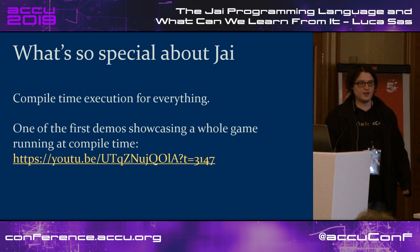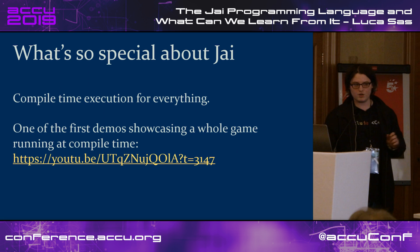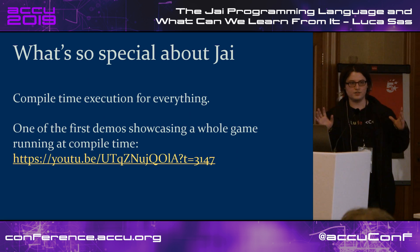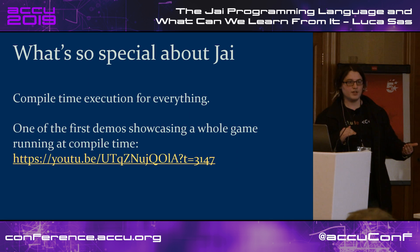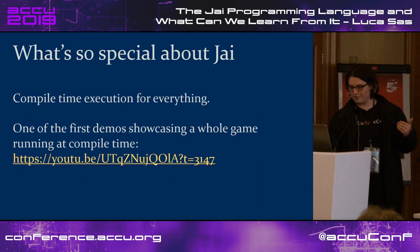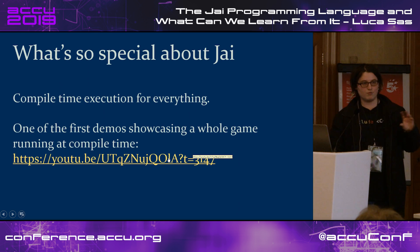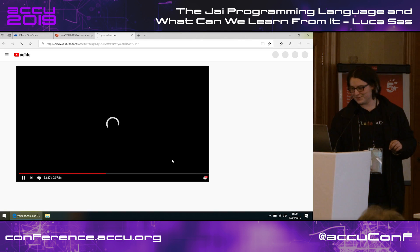One of the main features presented in one of the first demos of Jai was the ability to run everything at compile time. Your source files get compiled into an intermediate bytecode and the compiler knows how to run it. One of his first demos showcased an invaders game made in OpenGL running from within the compiler — basically, if you don't kill enough invaders, you don't get to compile your code.